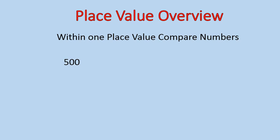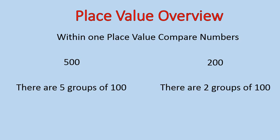Here's an example: 500 and 200. Five is in the hundreds column, so there's five groups of 100. Two is also in the hundreds column, so there's two groups of 100. There's five groups of 100, two groups of 100. We would say 500 is greater than 200. That's how we would analyze or compare these two numbers.